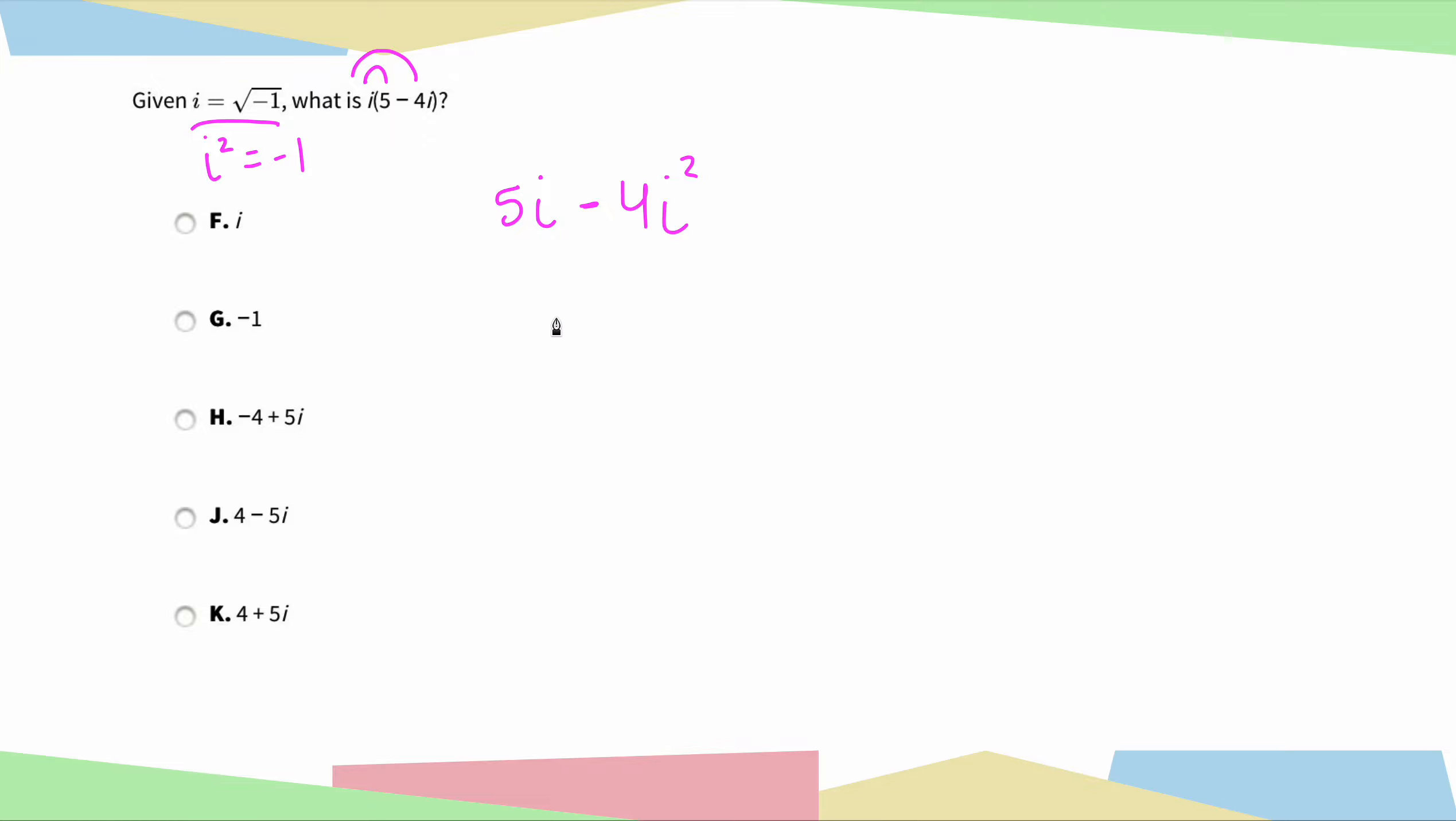So now what we're going to do is we're going to plug in for i squared. We're going to replace that with negative 1. And then negative 4 times negative 1 is just a positive 4.